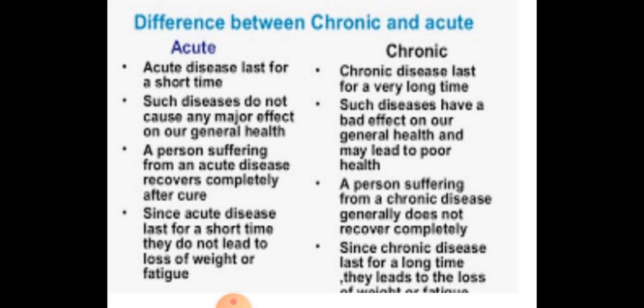If we talk about examples: in acute disease, there is fever or cold. After taking medicine, the person is normalised — we have fever, we take medicine, we are fine. For example, viral fever is an acute disease. But if we talk about chronic diseases, examples include AIDS, diabetes, and cancer. These diseases are long lasting and persist over a long period of time.